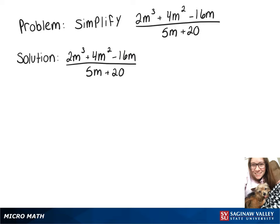In this video, we want to simplify 2m cubed plus 4m squared minus 16m over 5m plus 20.